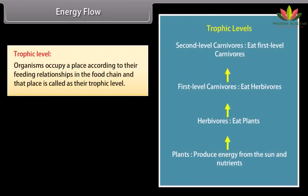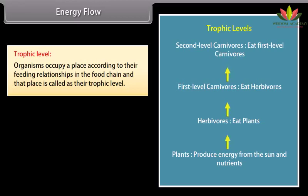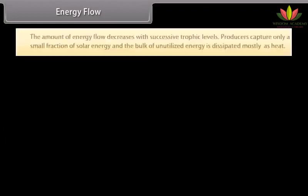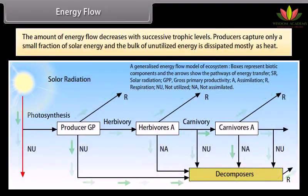Energy flow and trophic levels. Organisms occupy a place according to their feeding relationships in the food chain, called their trophic level. Plants that produce energy from the sun are the first trophic level. Herbivores that eat plants are at the second trophic level. First-level carnivores are at the third level, and second-level carnivores are at the fourth level. The amount of living material present at a given time is called standing crop. The amount of energy flow decreases with successive trophic levels.